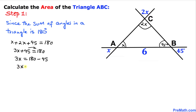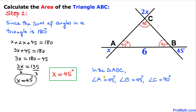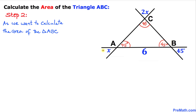Moving 45 to the other side: 3X equals 180 minus 45, so 3X equals 135. Dividing both sides by 3, X turns out to be 45 degrees. So this X is 45 degrees, and angle C is 2 times 45, which is 90 degrees. Therefore, in triangle ABC: angle A is 45 degrees, angle B is 45 degrees, and angle C is 90 degrees.